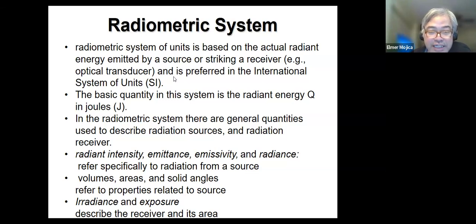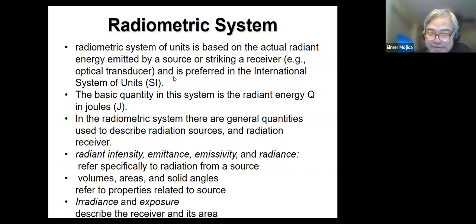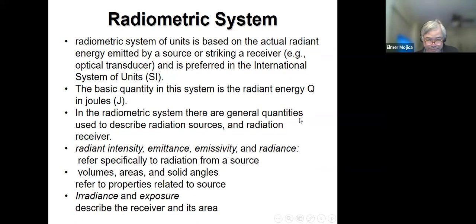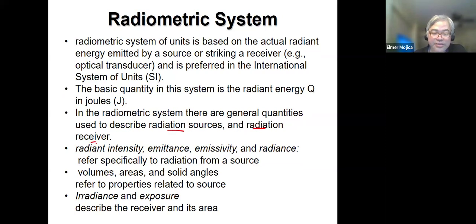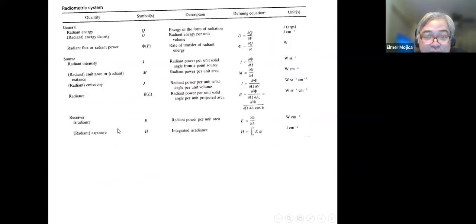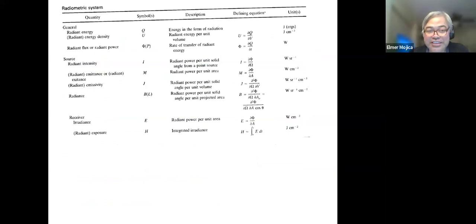The basic unit is the radiant energy in joules. These are just some of the general quantities used to describe radiation sources and radiation receivers. There's a table that discusses all these radiometric quantities.